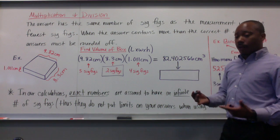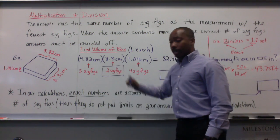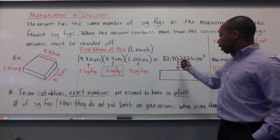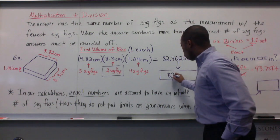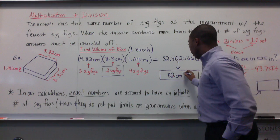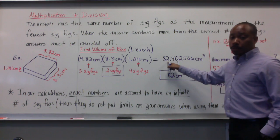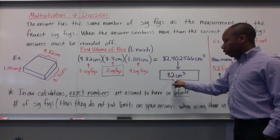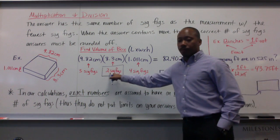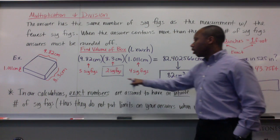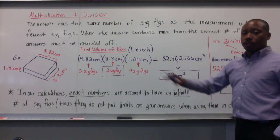Now, I can only have two significant figures because of that value there. So this has to be rounded to 82 cubic centimeters. This four does not tell that two to round up, so it must stay the same. We have 82 because of the two significant figures — two sig figs here for the least amount of sig figs in my measurements.